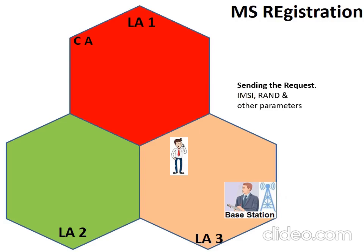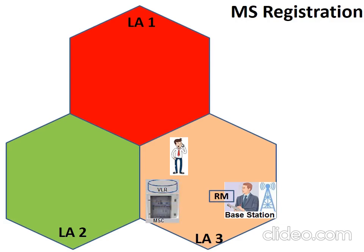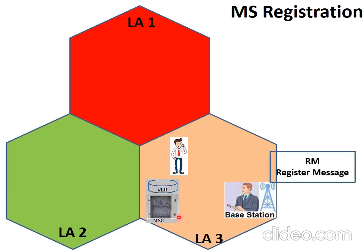The request message is received by the base station from the mobile station, and the base station validates the request message sent by the mobile user. After validating the random number, if it is OK, the base station sends a register message (RM) to the MSC — the mobile switching center — of that location area. The MSC receives the register message from the base station and verifies it.